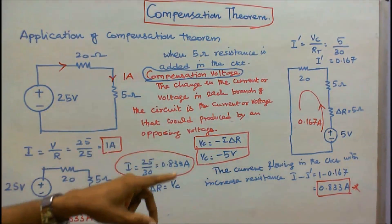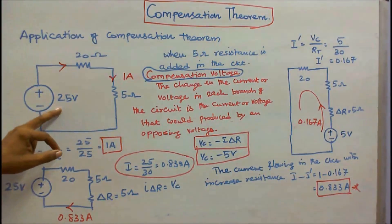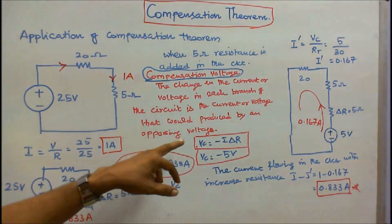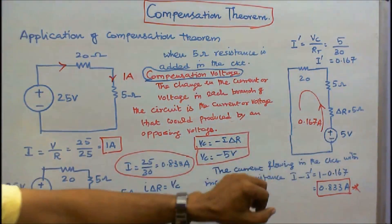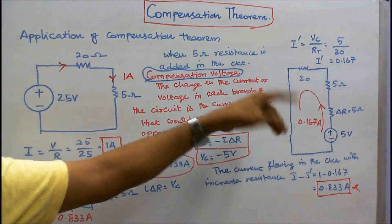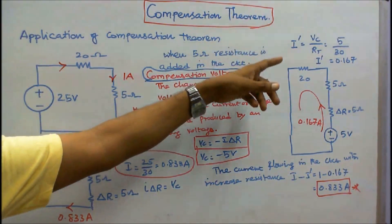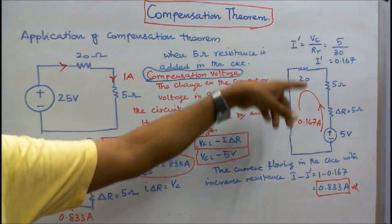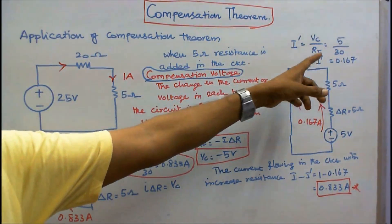The second step: I have to redraw the circuit. I short the 25 volt source. Here the voltage is the opposing voltage, so this is plus/minus 5 volts. The change in resistance is 5 ohms, and the original resistors are 5 ohms and 20 ohms. I can find I dash: I dash equals compensation voltage divided by total resistance, that is 5 by 30 (20 plus 5 plus 5 equals 30). So I dash equals 0.167 amps.